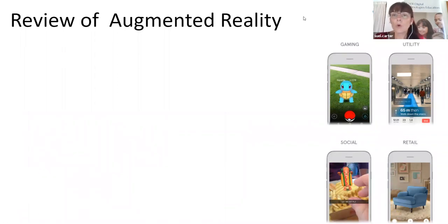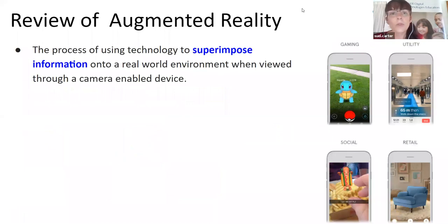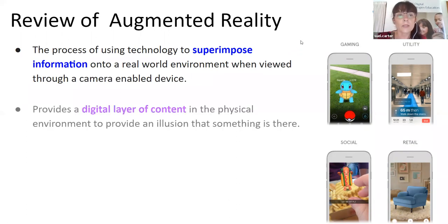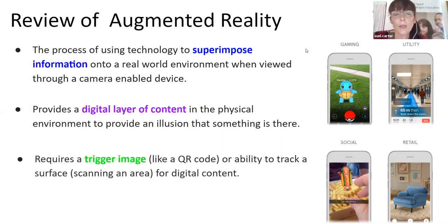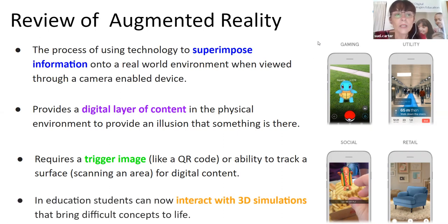A brief review of augmented reality: basically, it's how we use technology to superimpose information into our real world environment using the camera on a digital device, providing a digital layer of content into our physical environment. An example that most people know is Pokemon Go. AR does require a trigger such as a QR code, an area for scanning, or the glyphs on the outside of the Merge Cube for that digital content to be seen. In education, this enables students to interact with three-dimensional simulations that bring difficult concepts to life.